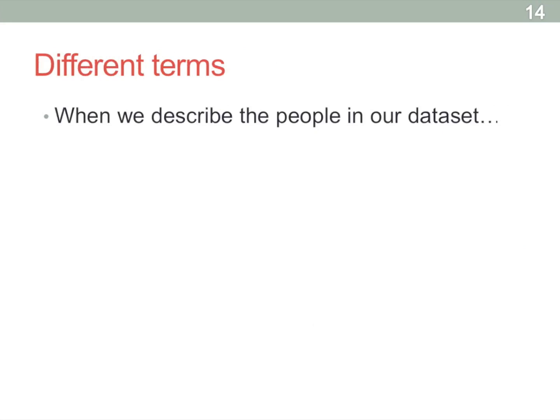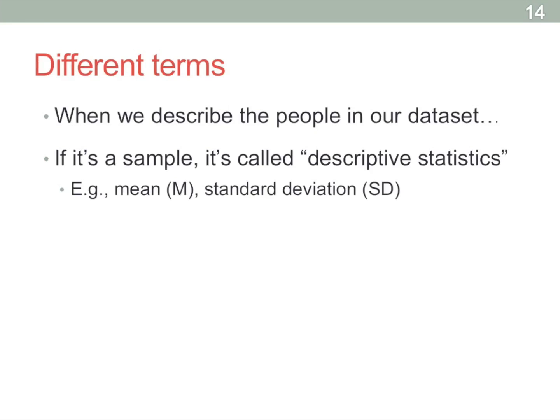When we describe people, here are some different terms that we use in psychology to denote between samples and populations. Whenever we're talking about statistics having to do with just samples, we always talk about those as descriptive statistics — things like means and standard deviations. In this case, we always use uppercase English alphabet letters, so mean is typically abbreviated as M, and standard deviation as SD.